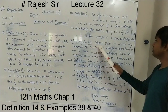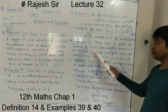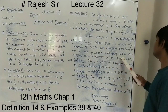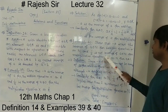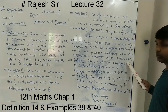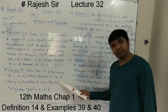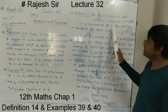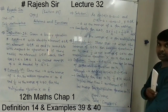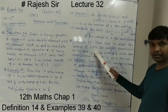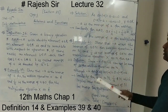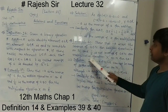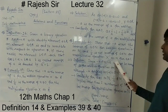Now Example 40: show that minus A is not the inverse of A belonging to ℕ for addition operation on ℕ, and 1 upon A is not the inverse of A belonging to ℕ for multiplication operation, for A not equal to 1. In Example 39 we showed inverses on ℝ, but if we take the set as natural numbers ℕ, then minus A will not be the inverse of A and 1 upon A will not be the inverse of A.